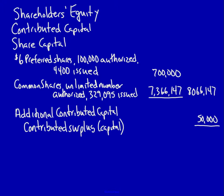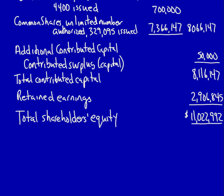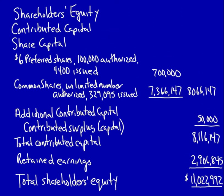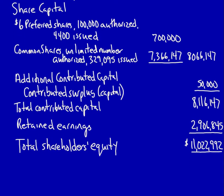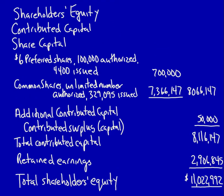That gives me total contributed capital. I now add retained earnings, and that provides me with total shareholders' equity. Looking at it together: we start with shareholders' equity, move on to contributed capital, and once we have the total contributed capital, we add in the retained earnings to get the total shareholders' equity. And that is the shareholders' equity section of the statement of financial position, also called the balance sheet. I'll see you in the next video.